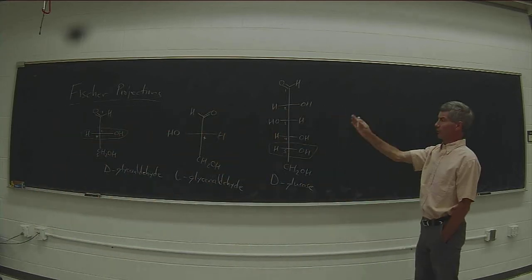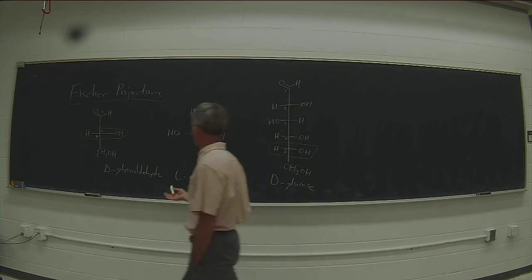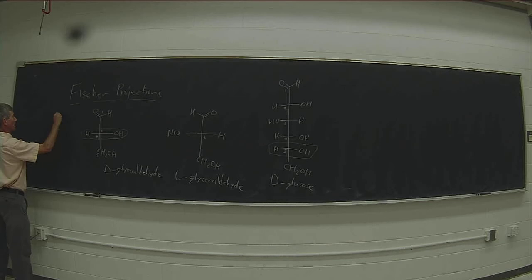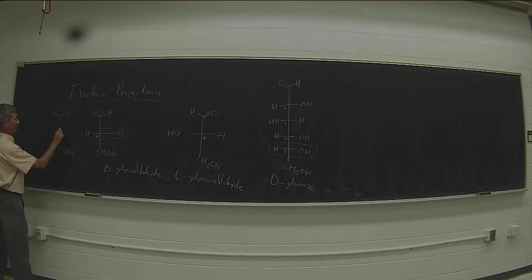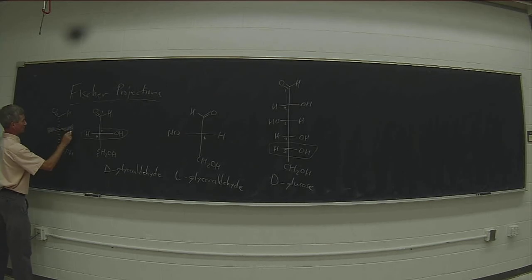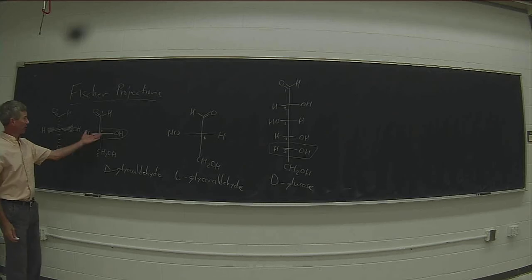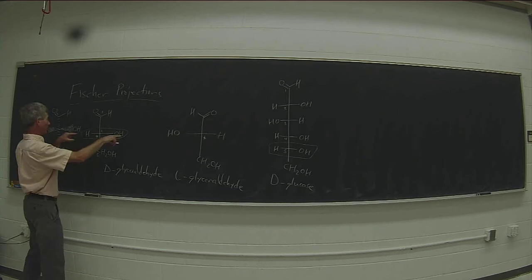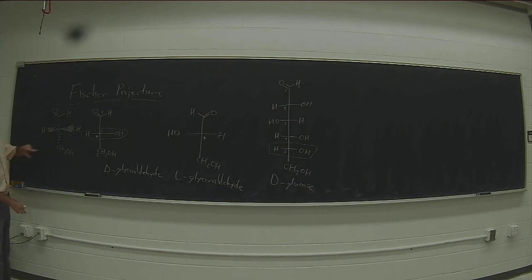So how do you go from a Fischer projection to a dashed wedge structure? The convention in a Fischer projection is that the things on the vertical are going back behind the board, and the things on the horizontal are coming out. So I call this the bowtie conversion, where the horizontal is the bowtie and the vertical is back.